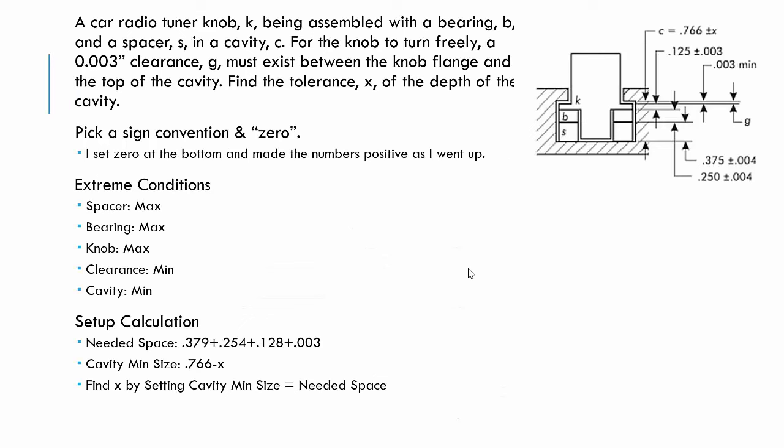So how do we do this? I need to pick a sign convention and a zero. So I put 0 at the bottom and it's positive going up and it's negative going down. So what are my extreme conditions? For the spacer, it's going to be max. For the bearing, it's going to be max. For the knob, it's going to be max. For the clearance, it's going to be the minimum. And for the cavity, it's going to be the minimum. And what I'm trying to solve for is this x here.